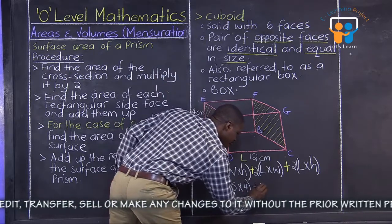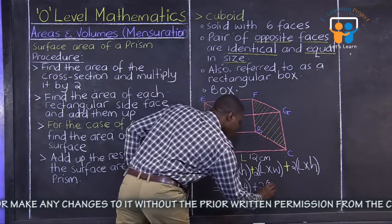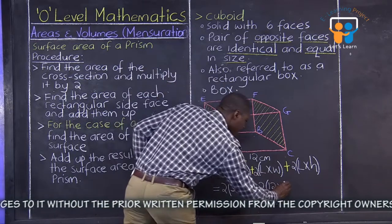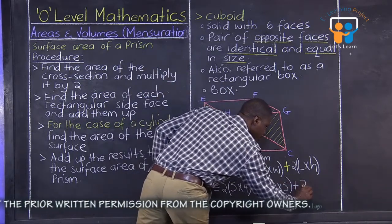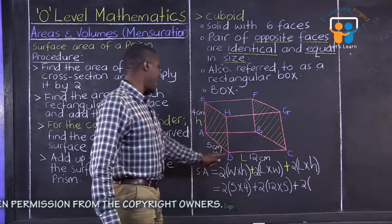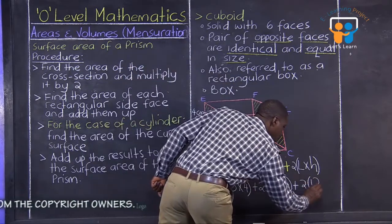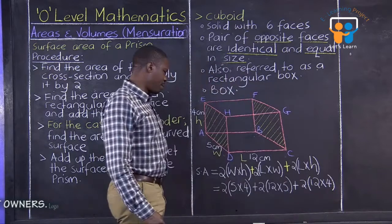Plus 2 into length. Length is 12. Times the width, which is 5. Then plus 2 into our length is 12 times the height, which is 4. So, 12 times 4. We are substituting.